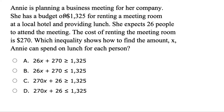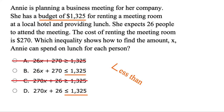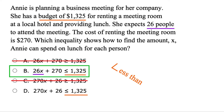For this one, we're going to convert this story into one of these inequalities. Annie's planning a business meeting with a budget of $13.25 — we have to stay below that amount, so it's less than. The less-than symbol kind of looks like an L. The other options use 'more than,' so we eliminate those. The cost of renting the room is 270, paid just once, so it's plus 270. We've got 26 people, and x is the amount spent on lunch per person, so we multiply 26 times x. Answer B has the whole story.